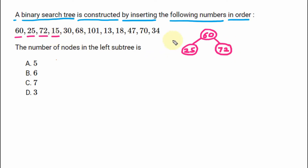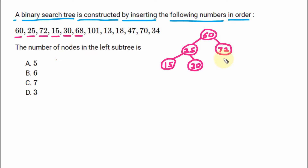Next is 15. 15 is less than 60 and less than 25, so it goes on the left branch of 25. Next value is 30. 30 is less than 60 but greater than 25, so on the right branch of 25 we have 30. Next value is 68. 68 is greater than 60 but less than 72, so on the left branch of 72 we have 68. Next value is 101. 101 is greater than 60 and greater than 72, so on the right hand side of 72 we have 101.